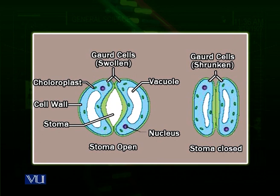Stomata are parts of the leaves which, when they swell up, open the pathway and expose the internal part to the environment. The stomata present inside the leaves actually connect the leaves with the external environment. This process is for removal of water from the inside of the leaves towards the outside, which is called transpiration.